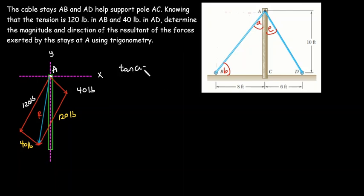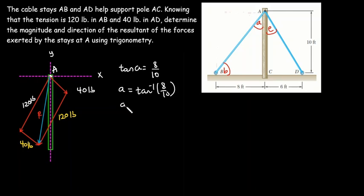Tan(A) equals the opposite side, which is 8 feet, divided by the adjacent side, which is 10 feet. So angle A equals tan⁻¹(8/10), which gives us a value of 38.66 degrees.